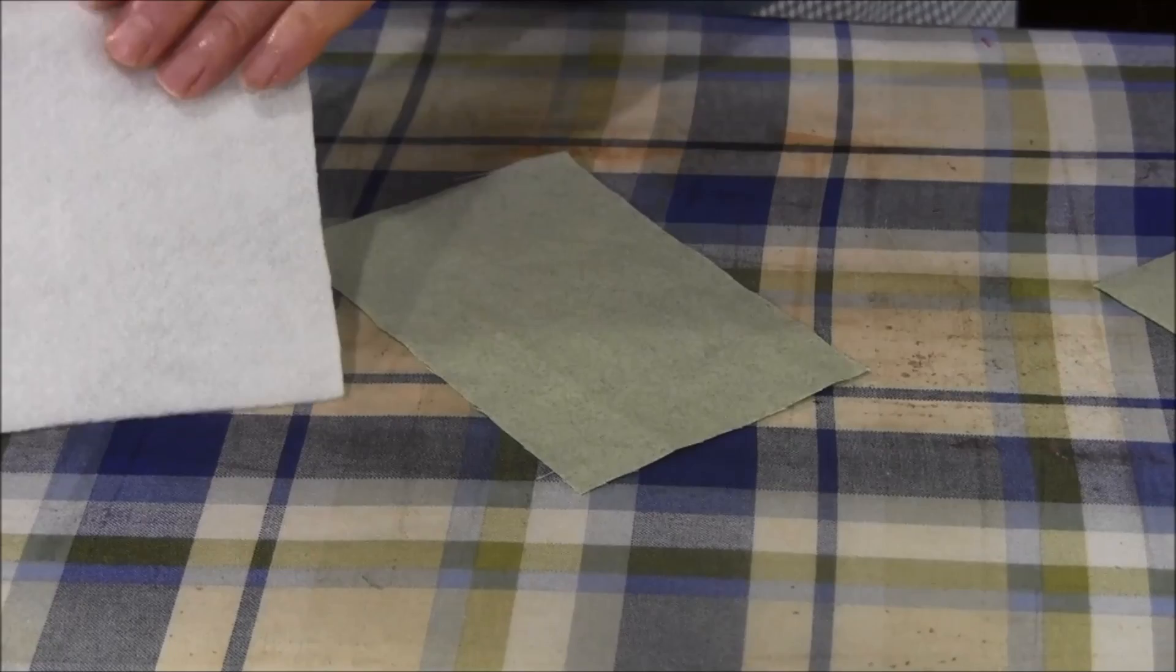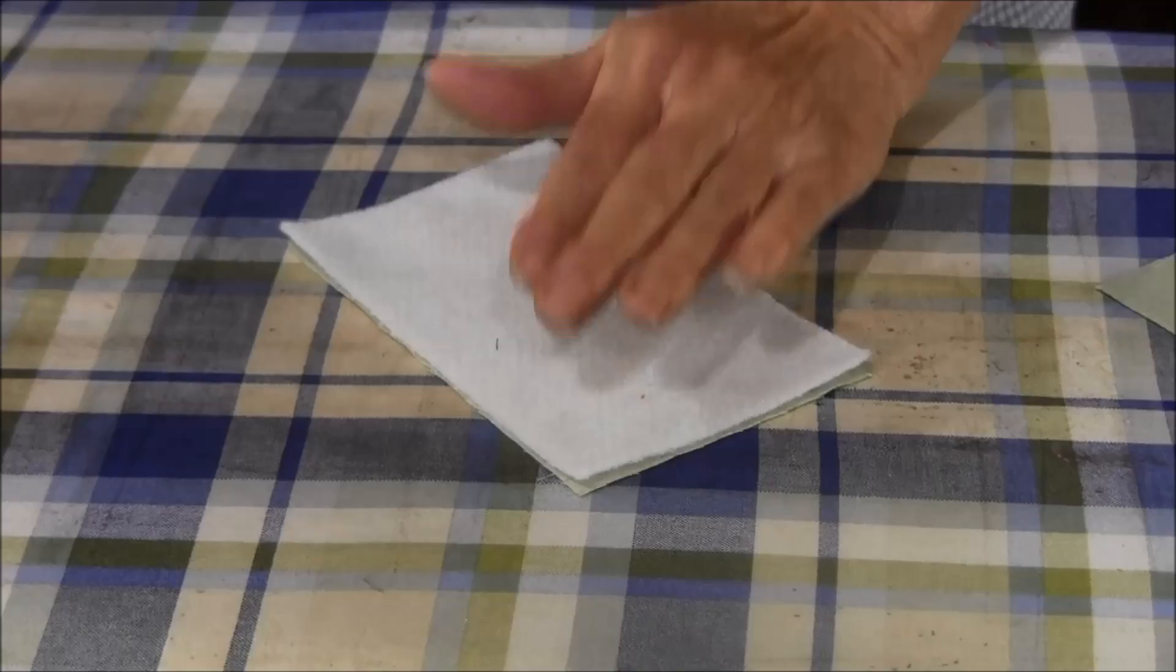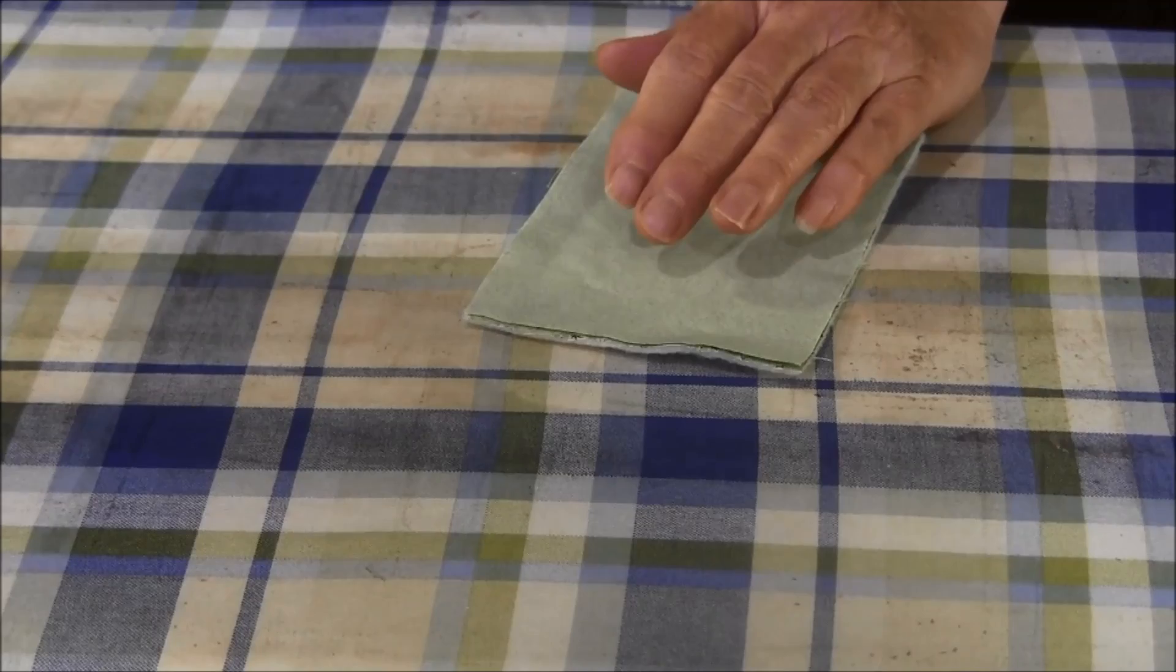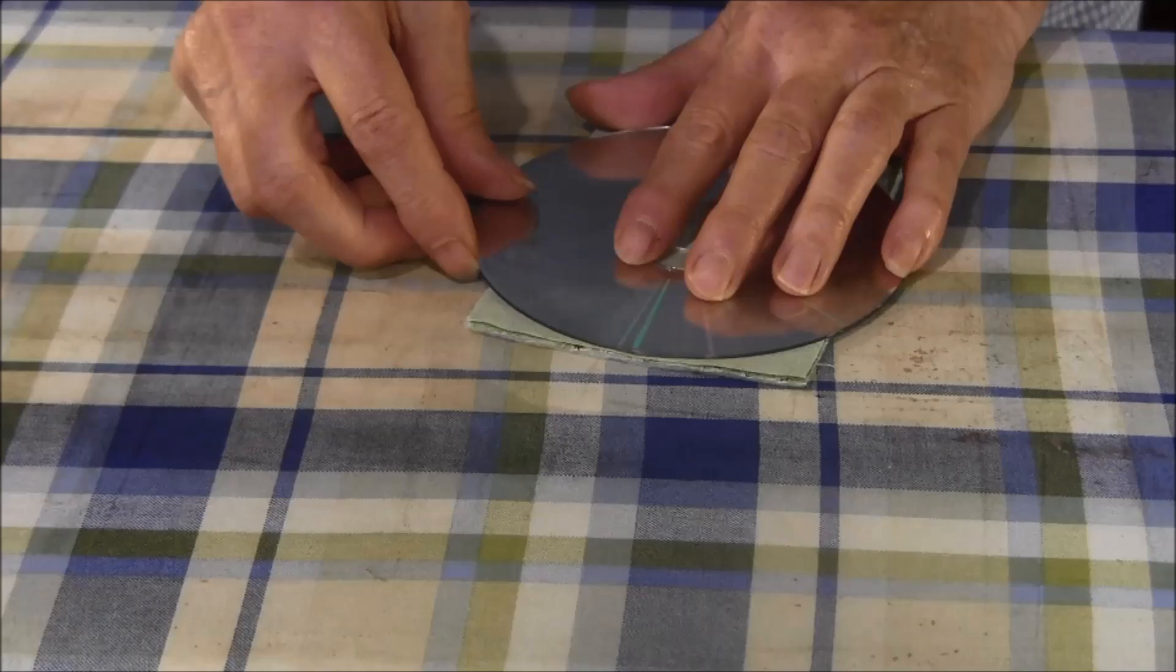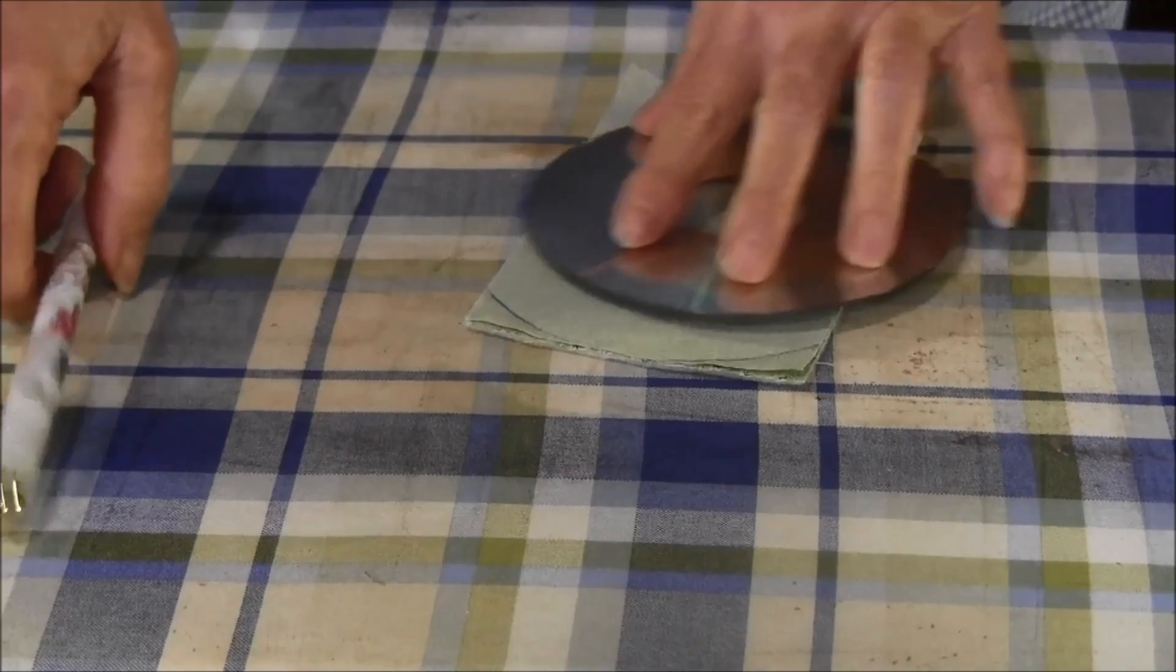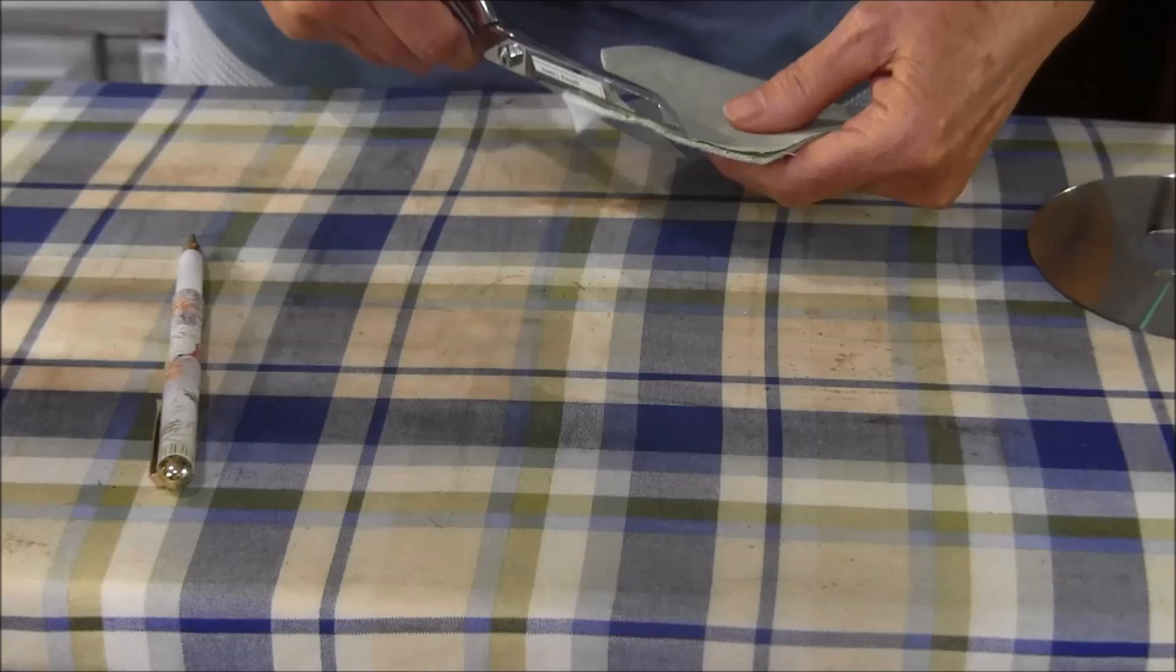Fuse the interfacing or fleece to the wrong side of one of your fabrics. Now place the fabrics right sides together and we're going to round the top. What I use to round the top is an old CD or DVD. I just place it on the fabric, mark it with a pen on the wrong side, and cut it out.